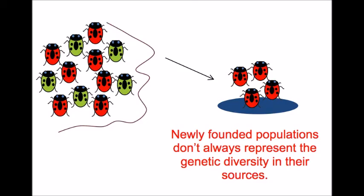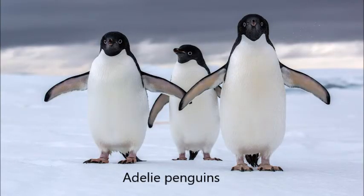Now, what about non-selective mechanisms of evolution? In very small populations of organisms, the founder effect and genetic drift can greatly magnify certain traits. If, for example, a small population of penguins were to move to a place uninhabited by any other penguins they could mate with, and those penguins were to reproduce and grow in population size, then the founder effect might cause one or more genes to predominate in a population, causing a loss of genetic diversity.